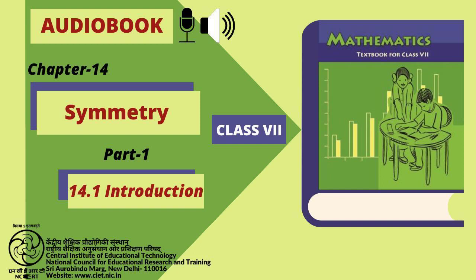Perhaps you might like to investigate this by paper folding. The concept of line symmetry is closely related to mirror reflection. A shape has line symmetry when one half of it is the mirror image of the other half. Figure 14.7. A mirror line thus helps to visualize a line of symmetry. Figure 14.8. Is the dotted line a mirror line? No. Is the dotted line a mirror line? Yes.